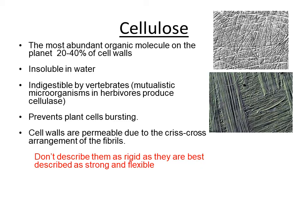Cell walls are permeable due to the very criss-cross arrangement of the fibrils. Cell walls are a bit like a wicker box that the cell cytoplasm sits in — best described as strong and flexible. It's inaccurate to describe them as rigid, which is a common mistake, as that does not reflect how cellulose is actually laid down.